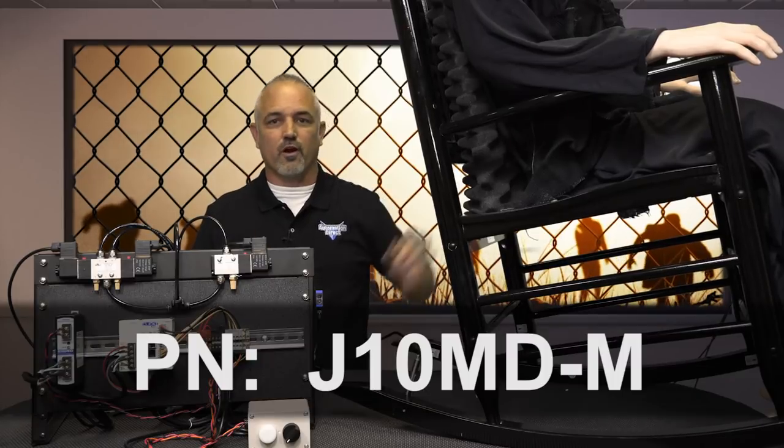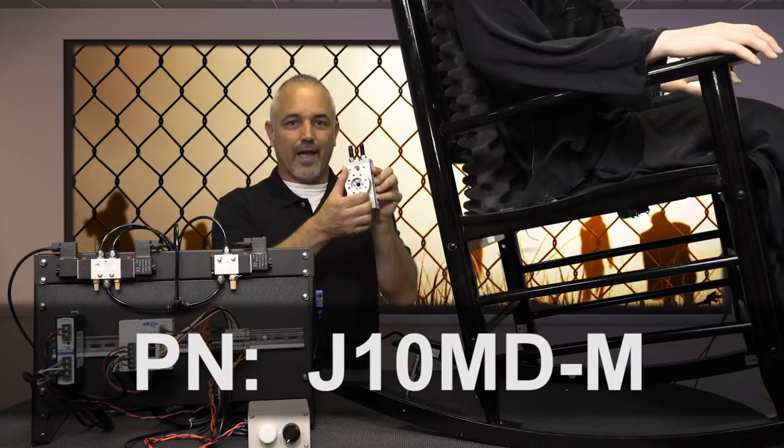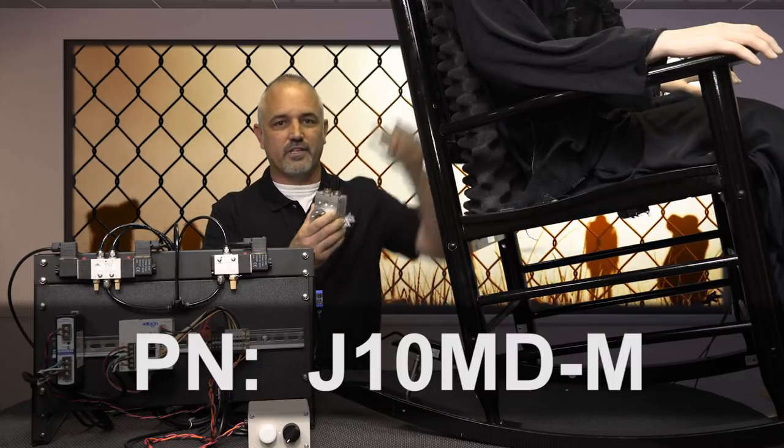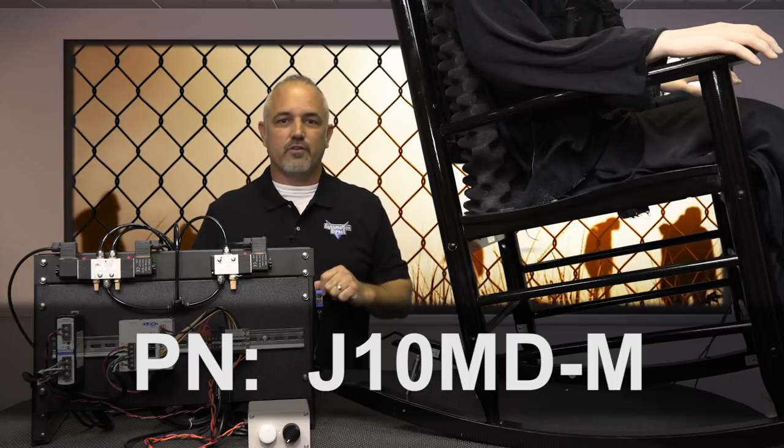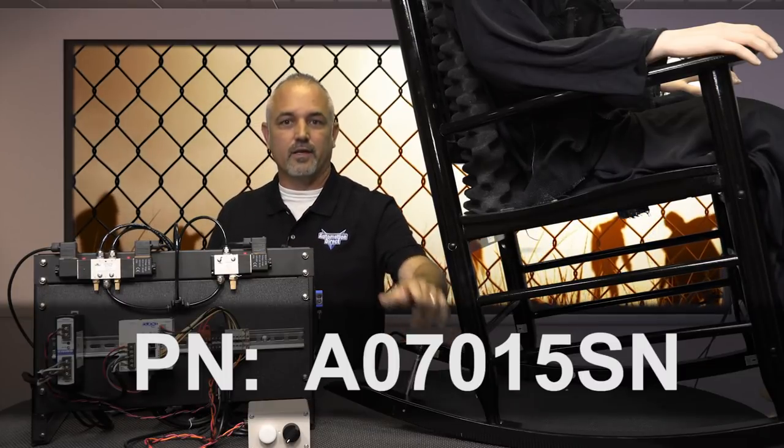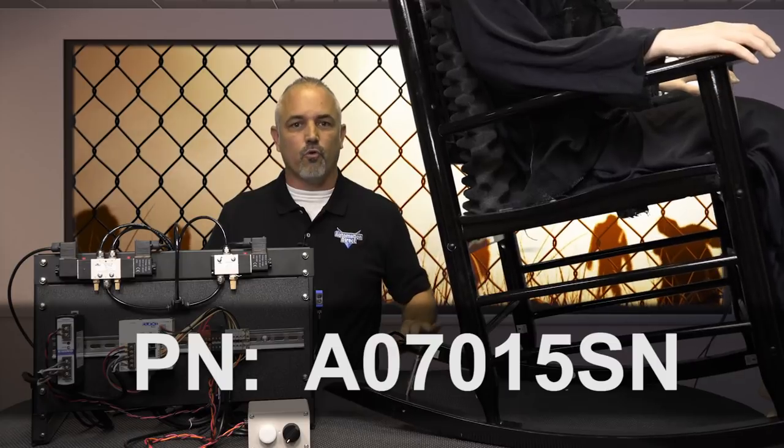This year, I'm using one of our new Nitra Rotary Actuators to rotate Ralphie's head. I use a standard spring return cylinder attached to the rocking chair to control the rocking motion.